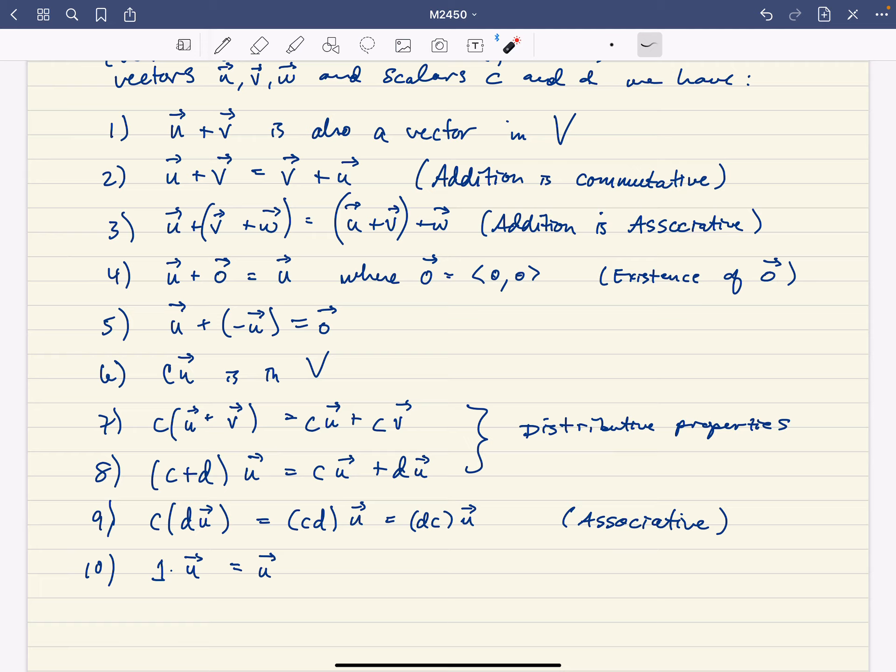There exists a zero vector, okay, so where—I need to be a little bit more careful here—where zero is the zero vector, whatever that means in the context. So I'll explain a little bit more there. For every vector, there's an additive inverse, so that part's fine.